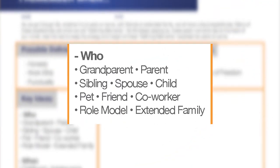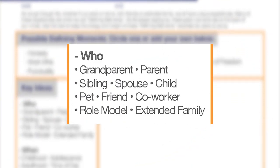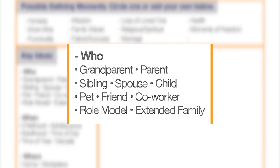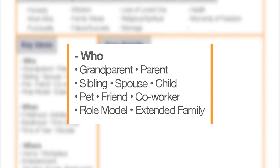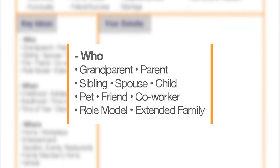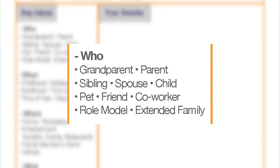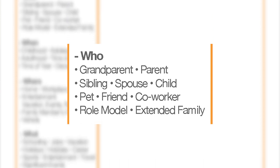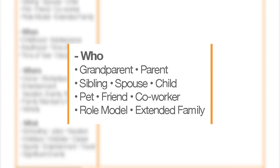Let me describe the form to you. On the left are the key ideas. Who? Who was involved in this I remember when memory? A grandparent, a parent, a sibling, a spouse, a child, a friend, a peer, a co-worker, a role model, extended family. Then you go to 'When' — when did it happen? Try to be accurate with the year: childhood, adolescence, adulthood, time of day, time of year.